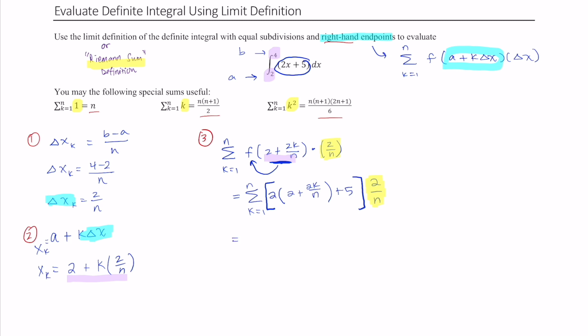So cleaning this up you could distribute and then combine like terms. So doing so we get, this is 4 plus 4k over n plus 5, then all of that will be multiplied by 2 over n. And cleaning that up again, we get 9 plus 4k over n times 2 over n.